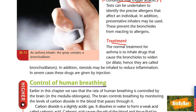Treatment: the normal treatment for asthma is to inhale drugs. It is important in the exam that you specify the type of drugs — you must say you are taking drugs that cause the bronchioles to widen or dilate, i.e., bronchodilator medicine. It is not enough to say you will take your inhaler; you must state the type of medicine it contains. In addition, steroids may be inhaled to reduce inflammation, and in severe cases these drugs can be given by injection.